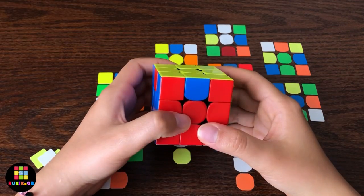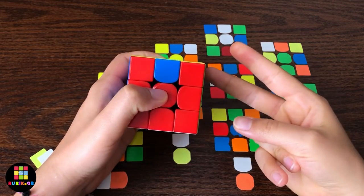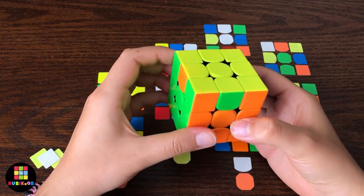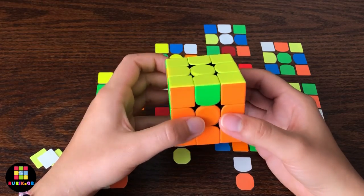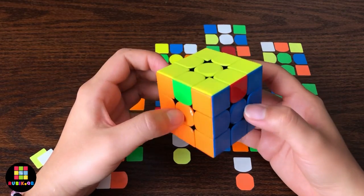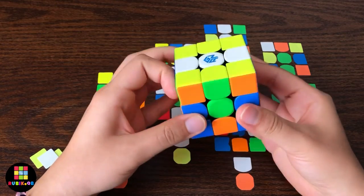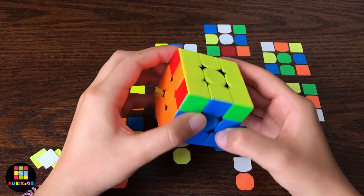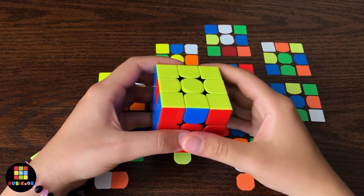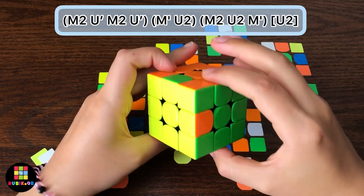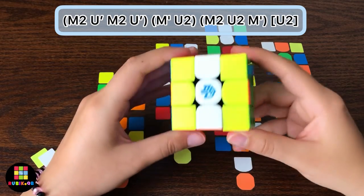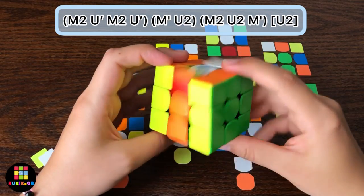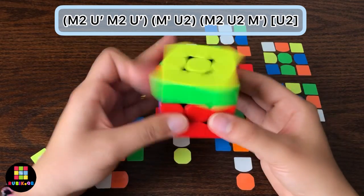For the last case, you can execute the algorithm from two angles. So hold the cube like this or like this and then do the algorithm. But if you execute the algorithm from the wrong angles, I mean something like this, you will get the H bar. So just pick up one of these two correct angles and then do the algorithm. So M2 U' M2 U' M U2 M2 U2 M' and U2.